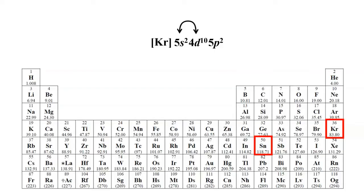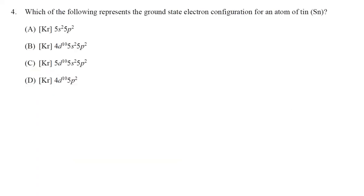Sometimes the 4d and 5s can be written in different orders — some notations place the highest energy levels at the very end. So the configuration for tin can be written as [Kr] 4d10, 5s2, 5p2. That tells us the correct answer to number 4 is B.